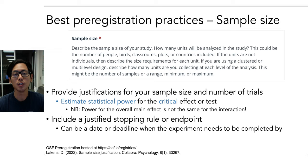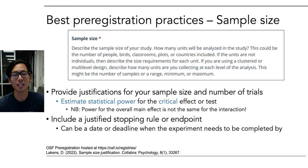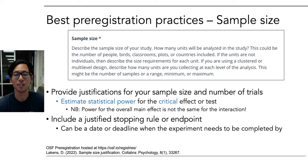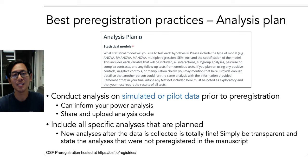Sample size is incredibly important to ensuring your research is robust and reliable. You should provide justifications for your sample size as well as the number of trials. The best practice is to estimate the statistical power for the critical effect or test — note that power for an overall main effect is not the same as for your interaction, so if your interaction is critical, estimate power for that specifically. You can also justify sample size with a Bayesian stopping rule or a principled endpoint such as a deadline. Daniel Larkins has a useful paper on various ways to justify sample size.